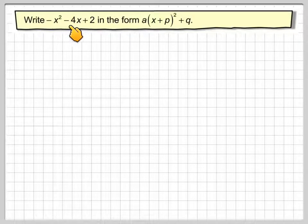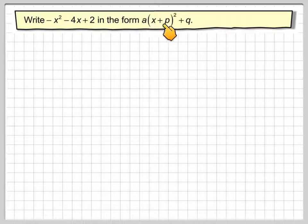Write -x² - 4x + 2 in the form a(x + p)² + q. So here we're going to complete the square where the number here is in fact minus 1.